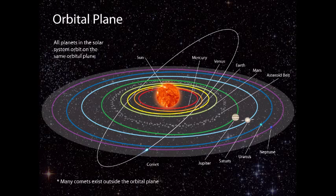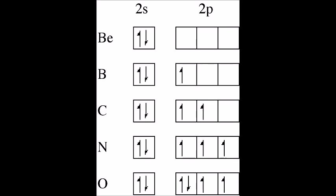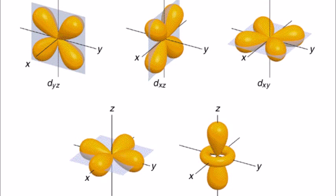So if planets were like electrons, each orbit could contain two planets, and the orbits would take several different shapes. So the orbits of planets could look like this, or these, or these, or these.